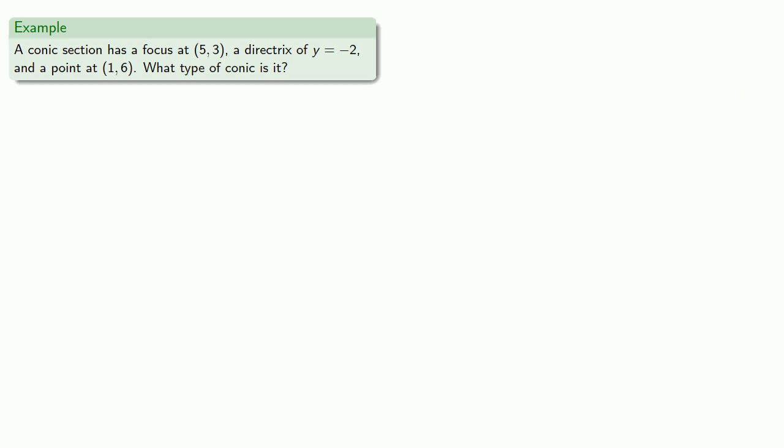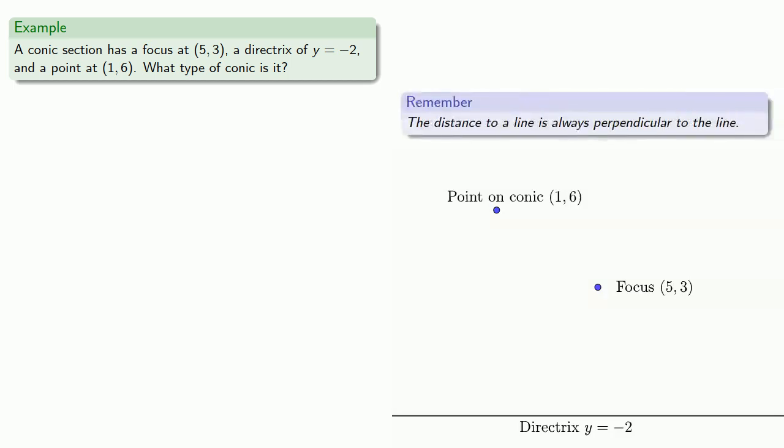So, if we graph our focus, directrix, and our point, we're interested in the distance between the point and the focus, and the point and the line. Now, the distance to a line is always measured perpendicular to that line. So, we'll drop the perpendicular. And, because we've drawn the picture, we can see that the distance to the line is going to be 8.